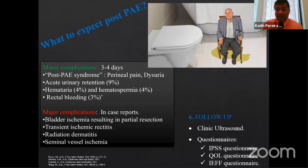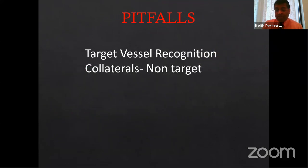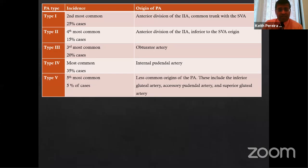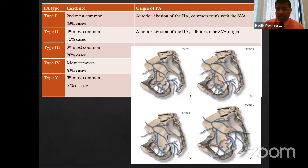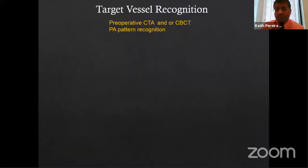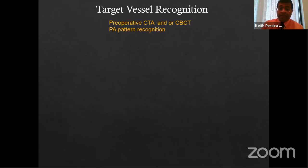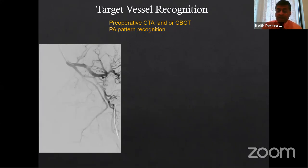For follow-up we score IPSS, QOL, and IIEF. Pitfalls in PAE are a huge topic — no two prostatic arteries, even in the same body, are alike. The prostatic artery can arise from the vesical artery, the SVA, or below it. A practical tip I learned from Sandeep Bagla: you recognize target vessels using CTA, but also through pattern recognition during angiography. On an LAO craniocaudal projection of the left side, identify the umbilical artery and pudendal artery as two vertical landmarks.